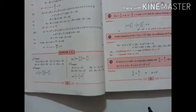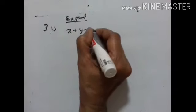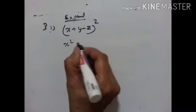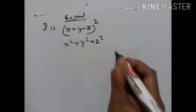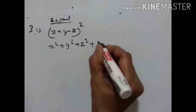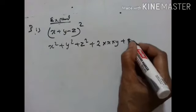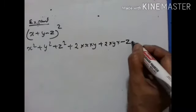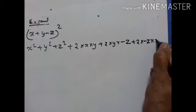Let's continue with Exercise 4C, Concise Mathematics, ninth class. Expand the third problem: (x + y - z)². Using the identity, first one square plus second one square plus z square, equal to what, plus 2 into first one into second one, plus 2 into second one into third one, plus 2 into third one into first one.